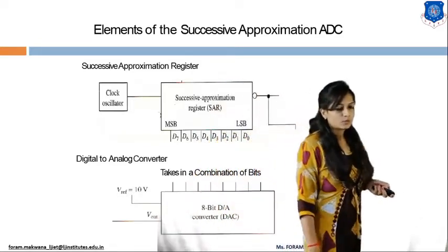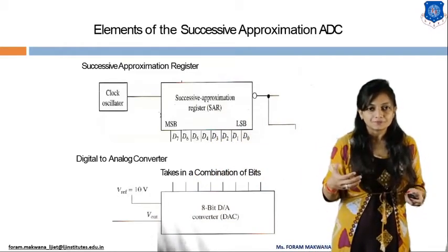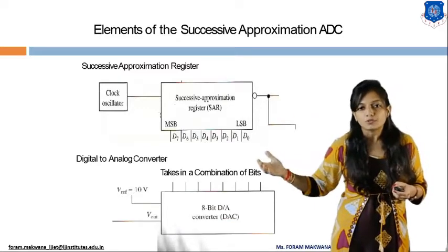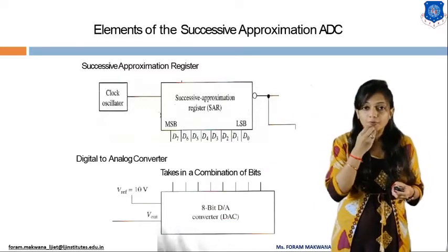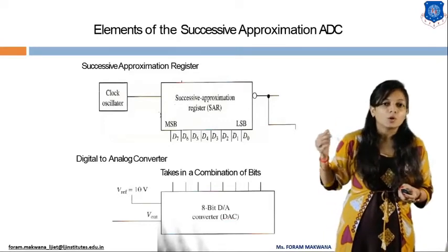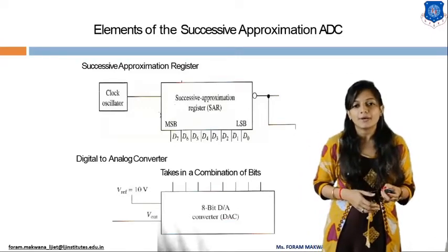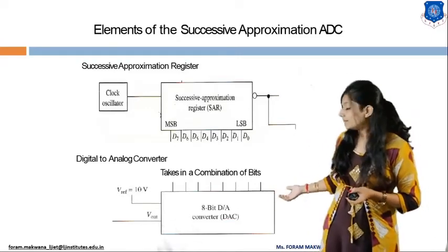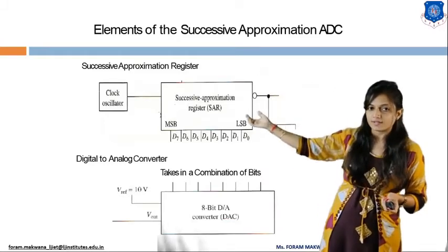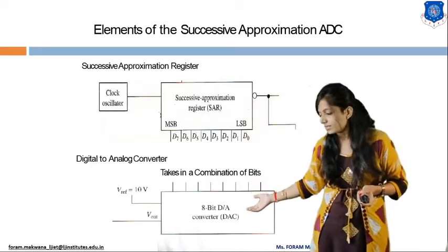We use the DAC converter because we are continuously comparing whether the output is the desired output or not. We compare using a comparator, but before the comparator, an 8-bit DAC converter is used. It is 8-bit because the output of the SAR is 8-bit, so those outputs are applied to the 8-bit DAC.